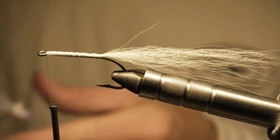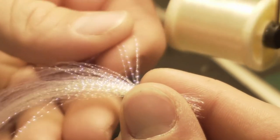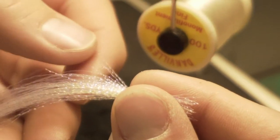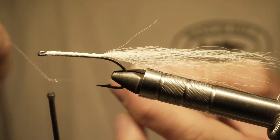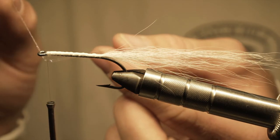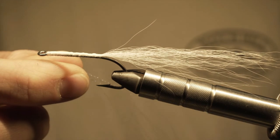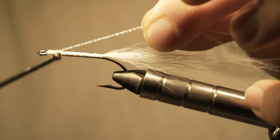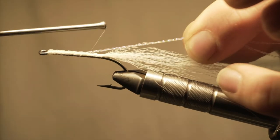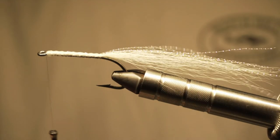Next we're going to come in with our crystal flash. I like to take three pieces of this. It doesn't have to be too flashy, just a little accent piece. I bring it around my thread and then line up the fibers so they're all kind of in a row, not completely because you still want to maintain that taper. Then I'll just tie those back all the way to the hook bend and come forward.